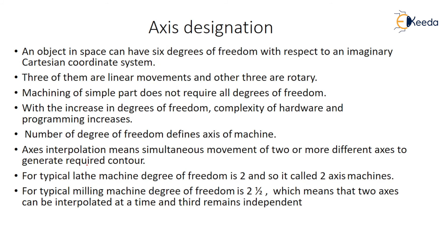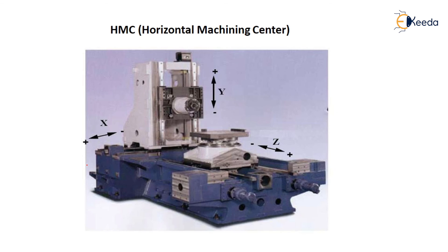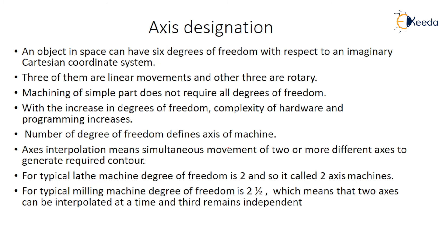Axis designation: objects in space can have degrees of freedom with respect to imaginary Cartesian coordinates. Three axes are for linear movement and three axes are for rotary movement. Every position can have rotary axes on the tool or work table. It can be a five-axis movement — three linear and two rotary. Six, five, or eight-axis machines are available depending on how many degrees of freedom are given. With the increase in degrees of freedom, complexity of hardware and programming increases.